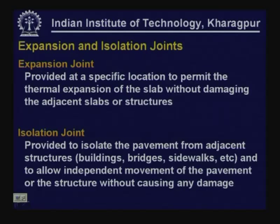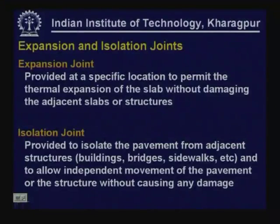An isolation joint is slightly different in the sense that these are provided to isolate the pavement from adjacent structures such as buildings, bridges, sidewalks, etc. The concrete slab may be passing through various structures so it should not be pushing against those bridges, culverts, or abutments. There is going to be a joint provided between the structure and the concrete slab to allow independent movement of the pavement or structure without causing any damage.